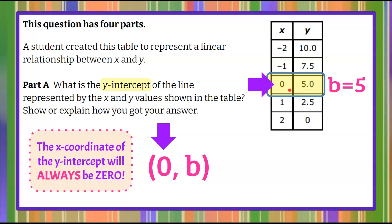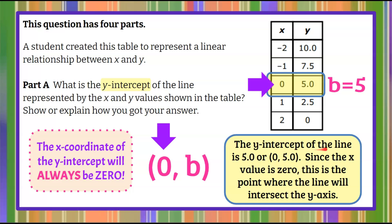If we plotted this point on a coordinate grid, we go from 0 up 5 on the y-axis. So (0, 5) is a point on the y-axis, and when we graph the line, the line will pass through (0, 5). So it crosses or intersects the y-axis at 5. Therefore, we can say that the y-intercept of the line is 5, or the ordered pair (0, 5). Since the x value is 0, this is the point where the line will intersect the y-axis.